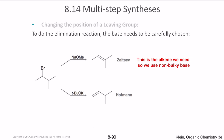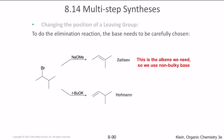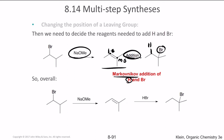To ensure the double bond is in the right position, we can use a simple strong base to create the Zaitsev product or a bulky base for the Hofmann product. Once we have the alkene, we perform the addition reaction: the more substituted carbon gets bromine and the less substituted carbon gets hydrogen — this is Markovnikov addition. The reaction occurs directly in the presence of HBr to give the final product.